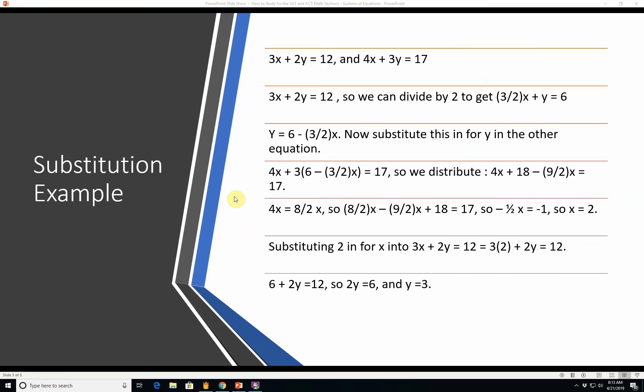Here's a quick substitution example. We have two equations 3x plus 2y equals 12 and 4x plus 3y equals 17. You can tell by looking at these equations there's no constant you can multiply these by to get this to be the same equation as this one. So we have two distinct equations. 3x plus 2y equals 12 so we can divide by 2 to get 3 halves x plus y equals 6. Let's subtract 3 halves x from each side so we get y equals 6 minus 3 halves x.